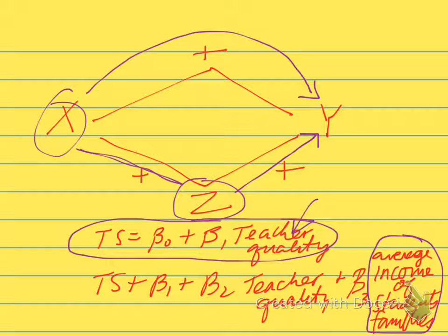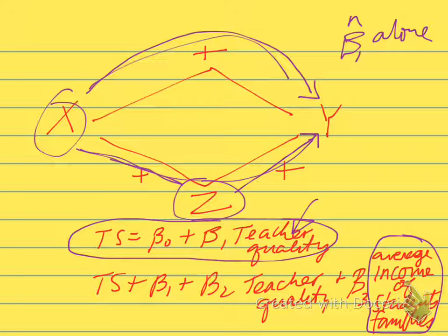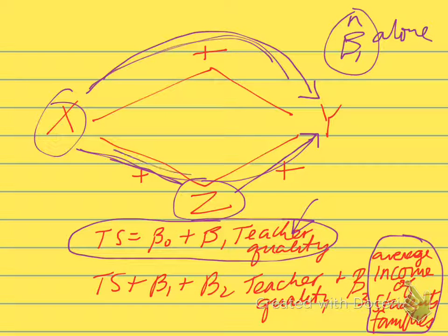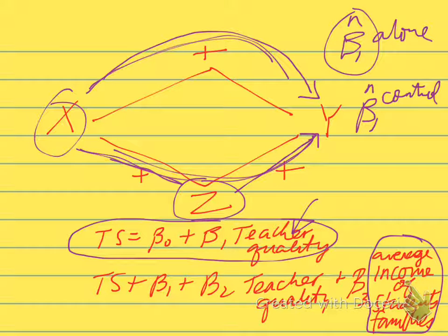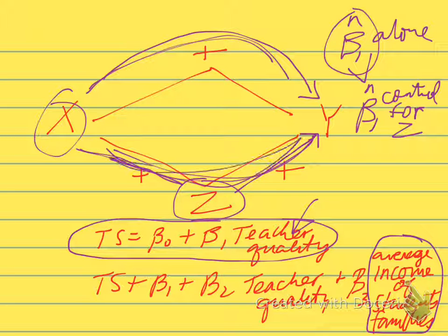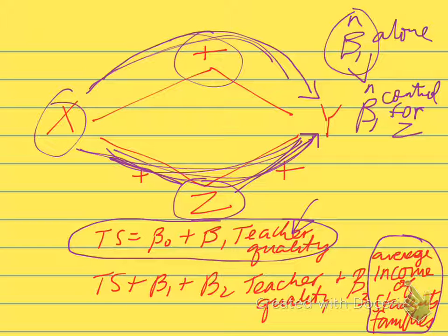Our estimated coefficient alone, when we estimate beta1 hat without controlling for z, will be the sum of two effects, the direct effect and the indirect effect. Both effects are positive, so beta1 hat will be too big. It has this direct effect and this indirect effect, they're both positive, so it'll be too big. When we control for z, this beta1 hat will be smaller than the original beta1, because now we're controlling for this effect, so the only effect that would be left over is the direct effect. That will be our estimate of what beta1 hat is.